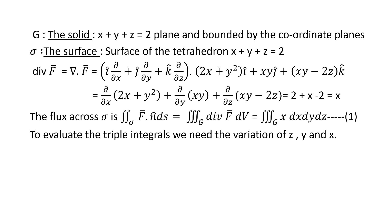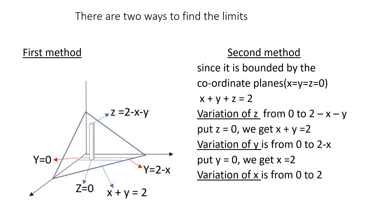The flux across the surface sigma is given by the formula double integral over sigma F dot n dS. Using Gauss Divergence theorem, it is enough to find the triple integral over the volume G of divergence of F dV. The divergence of F is x, so we evaluate the triple integral of x dx dy dz. We need the variation of z, y, and x. There are two methods to find the limits: the first method is based on the diagram of the tetrahedron.